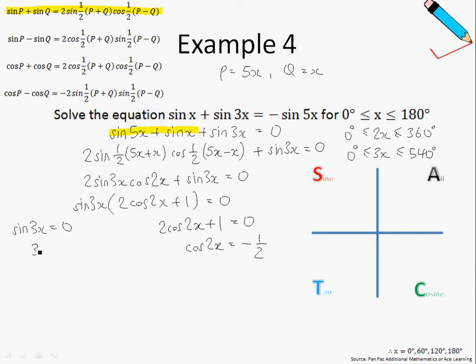So 3x, what are the possible values for 3x? Then we have 0 degrees, 180 degrees, 360 degrees, and 540 degrees. The easiest way to see this is probably by sketching the sine curve, the sine curve.